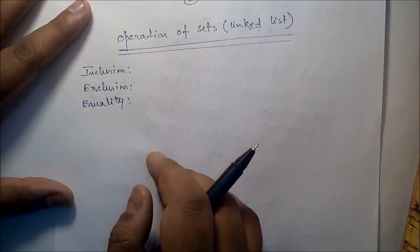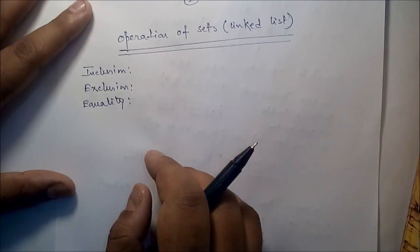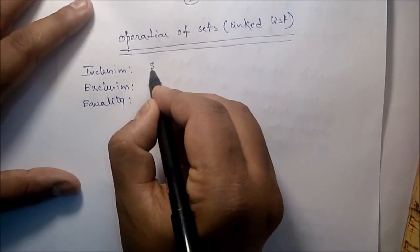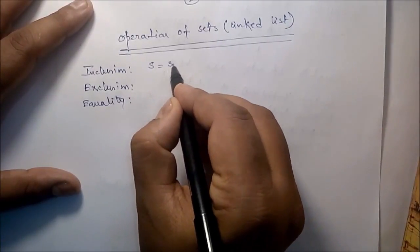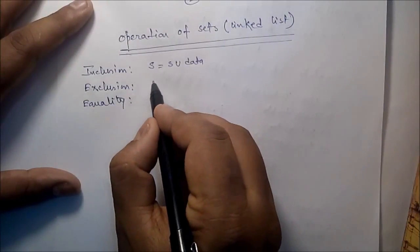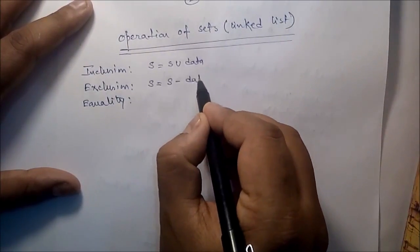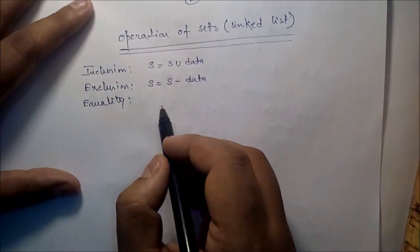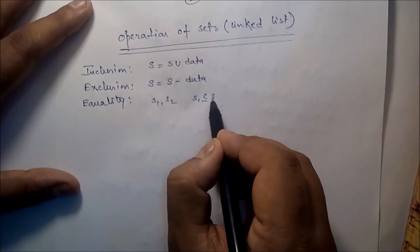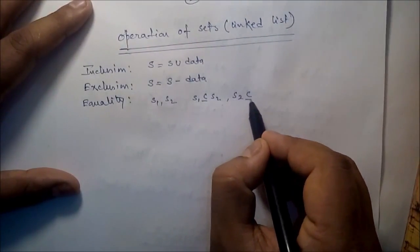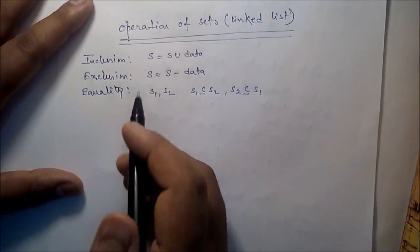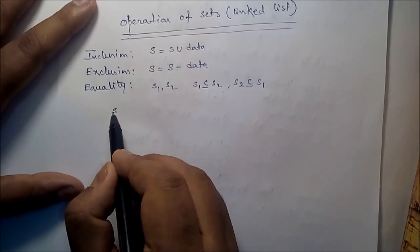The processor operations are inclusion, exclusion, and equality. Inclusion means adding data into a set, so s is equal to s union data. Exclusion means removing data, so s is equal to s minus data. Equality means we have to check whether s1 is a subset of s2 or not, and s2 is a subset of s1 or not.